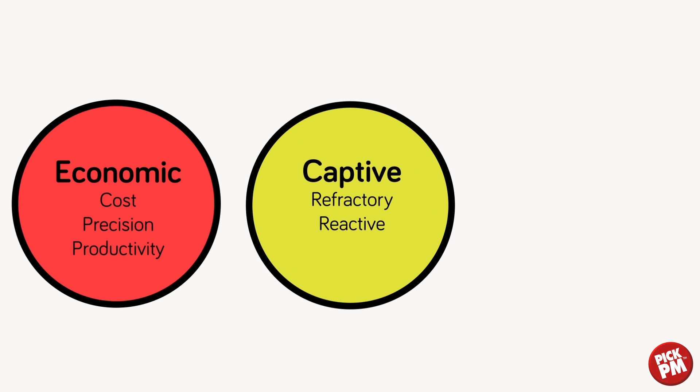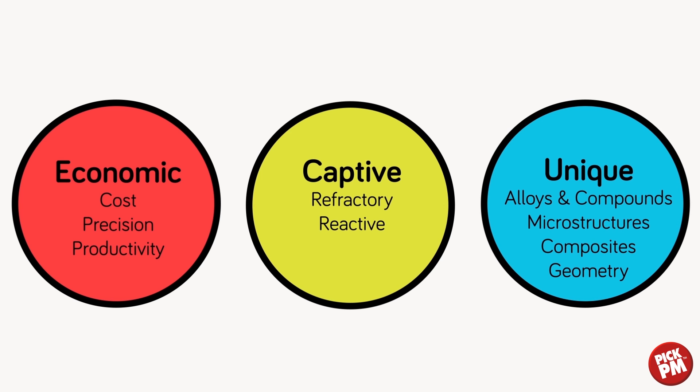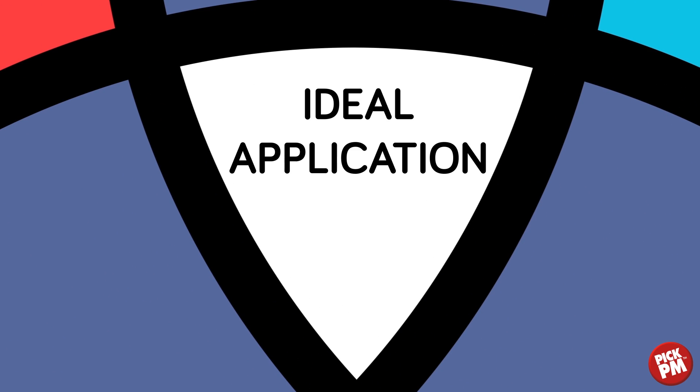Why PM? We look at the economic value, cost, precision, productivity, the captive nature of the material, refractory and reactive materials, and unique properties — alloys, compounds, microstructures, composites, and geometry. The intersection of the economic, captive, and unique geometry represents the ideal application. Components that fall into this area are definitely great candidates for powder metallurgy.